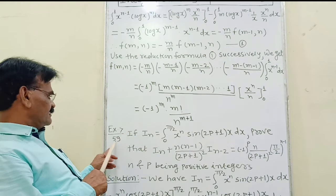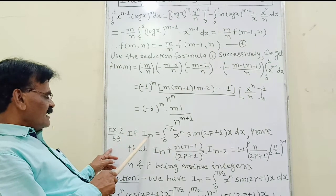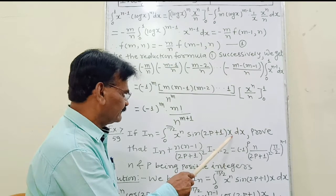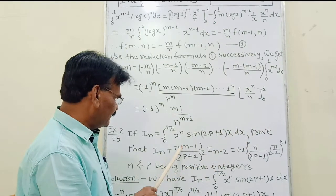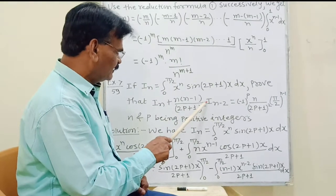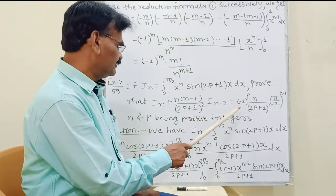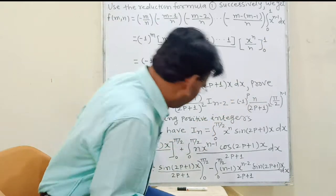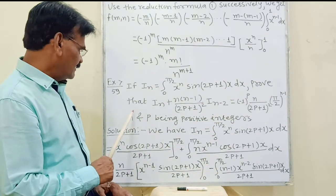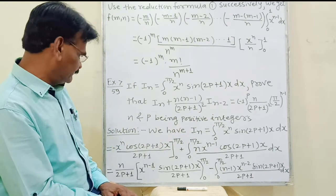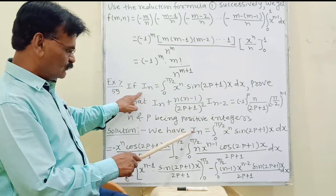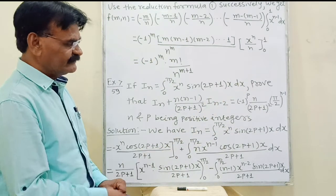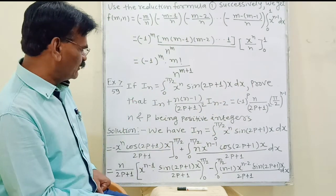Next, example 7 on page number 59. If Iₙ = integral from 0 to π/2 of x^n sin(2p+1)x dx, prove that Iₙ plus n(n-1)/(2p+1)² times I_(n-2) equals (-1)^p times n/(2p+1)² times (π/2)^(n-1), where n and p are positive integers.